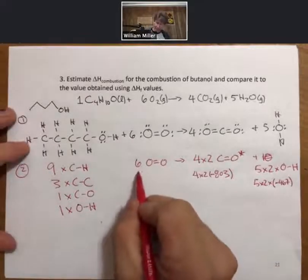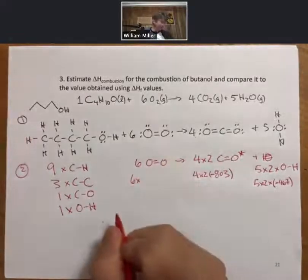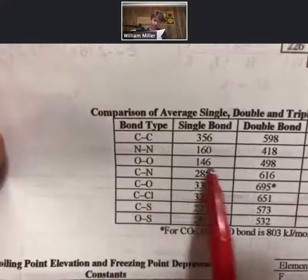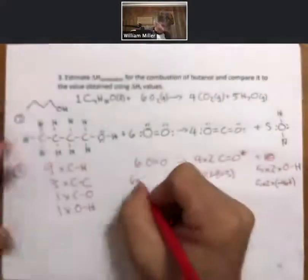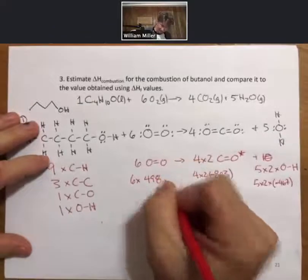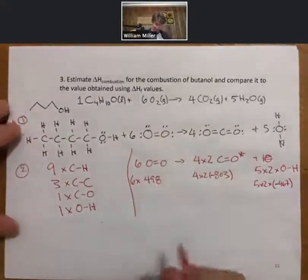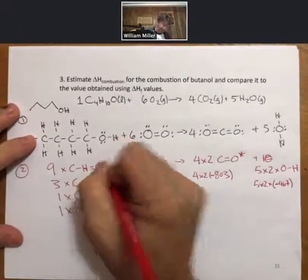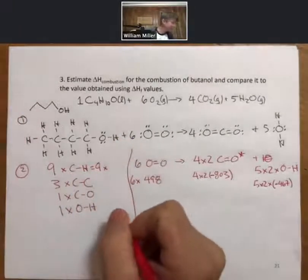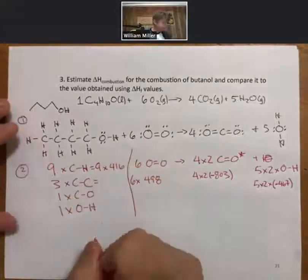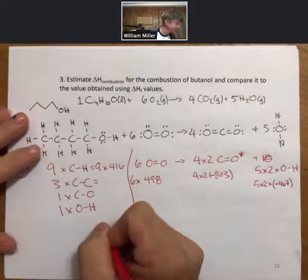And that's minus as well. Here, now on to the positive ones. Six times oxygen-oxygen double bond—oxygen-oxygen, 498. And that's positive. And now, let's keep this semi-organized. Carbon-hydrogen is 416.